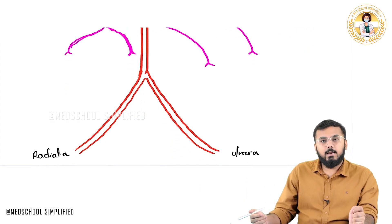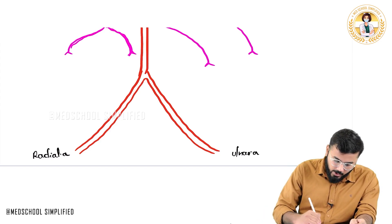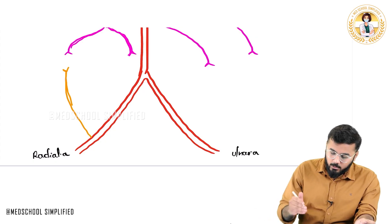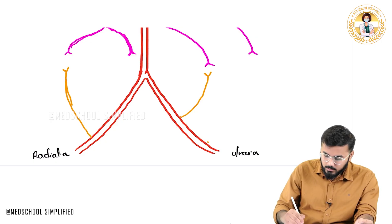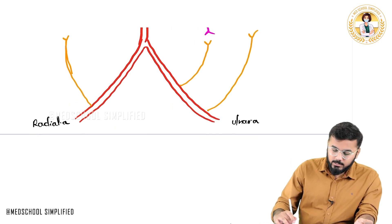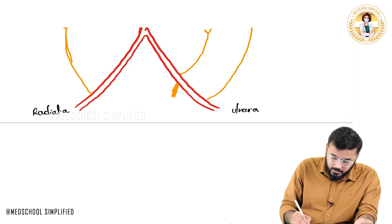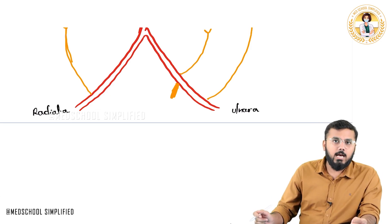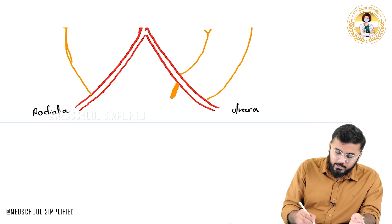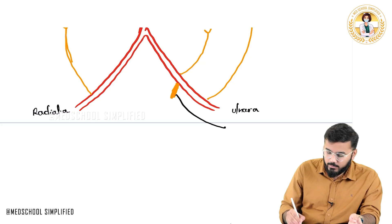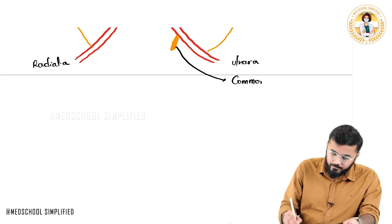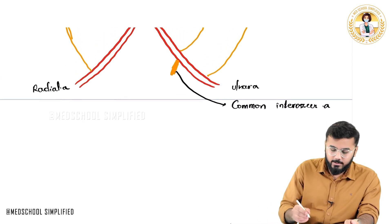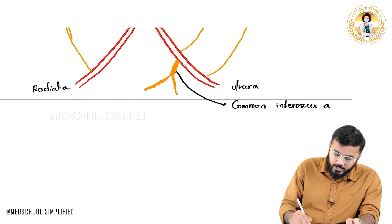From the radial artery, you have a branch that anastomoses with a branch of the deep brachial artery. On the left side from the ulnar artery, there are two branches. Also from the ulnar artery, there is a branch called the common interosseous artery — named because it is present between the radius and the ulna. This common interosseous artery divides into two further branches.